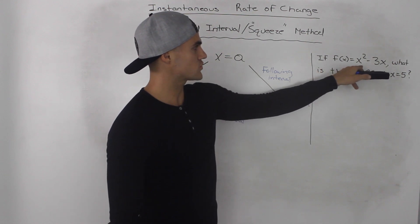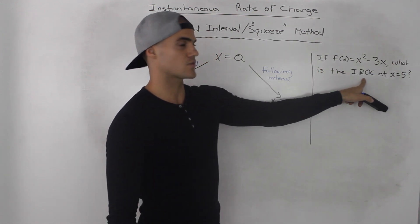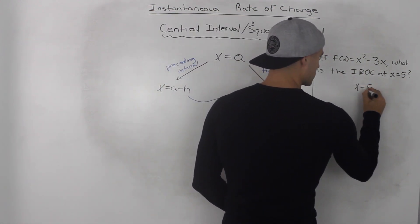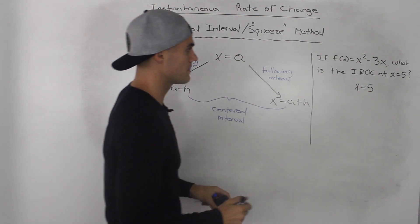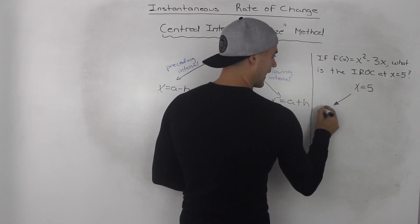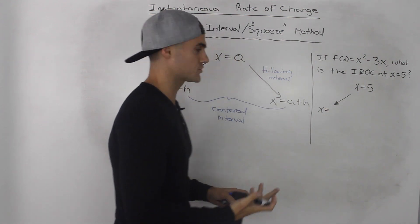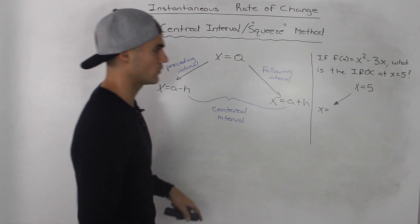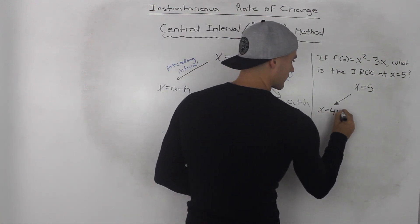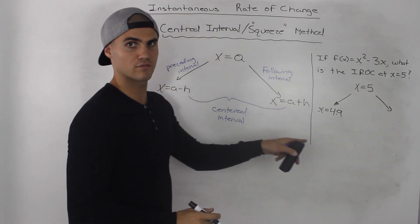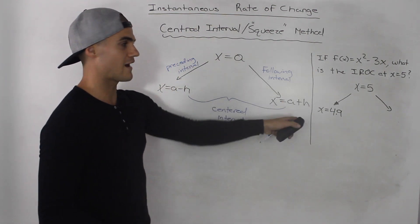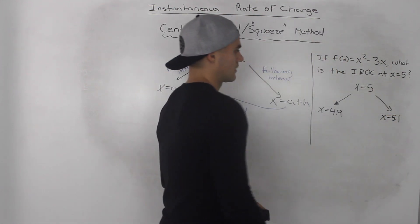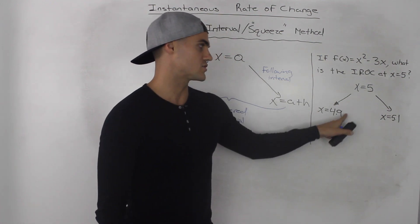For example, if we have the function x squared minus 3x, what is the instantaneous rate of change at x equal to 5? Using the centered interval method, we pick an x value less than 5 but close to it. Let's pick h equal to 0.1, so 5 minus 0.1 gives us 4.9. Then we pick another x point greater than 5 with the same difference h, so 5 plus 0.1 gives us 5.1.